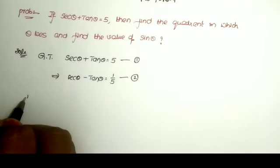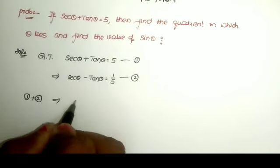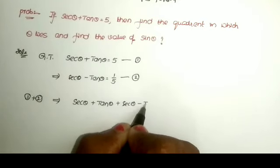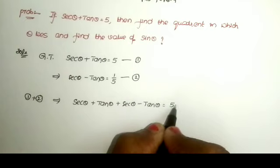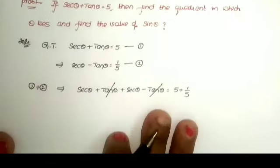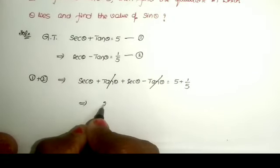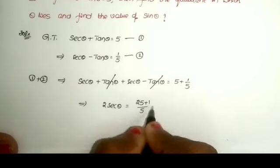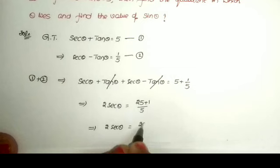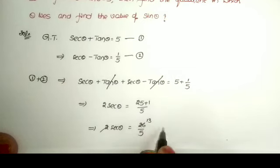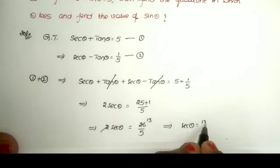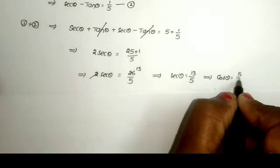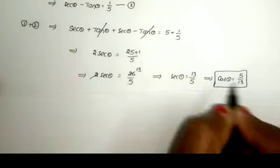Adding the two equations (equation 1 plus equation 2): secant theta plus tan theta plus secant theta minus tan theta. Here tan theta minus tan theta gets cancelled, giving 2 secant theta. On the right side, 5 plus 1/5 — taking LCM gives 26 by 5. So 2 secant theta equals 26 by 5, which implies secant theta equals 13 by 5. Therefore cos theta equals 5 by 13.